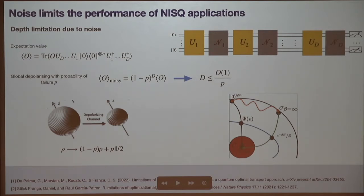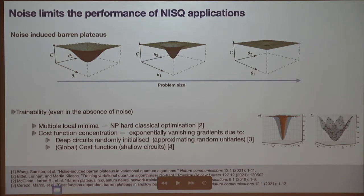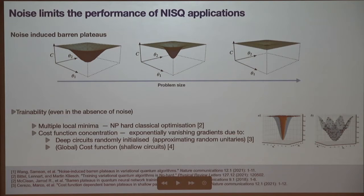Another way noise affects the energy landscape of an algorithm is the idea of noise-induced barren plateaus — there's been a lot of work done by the Los Alamos group on this. Basically, as you increase the problem size and want to run a variational algorithm, the energy and optimization landscape becomes flatter as noise builds up throughout the circuit. This issue is different from other trainability issues that happen even without any noise, which are related to the exponential concentration of cost functions.